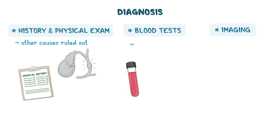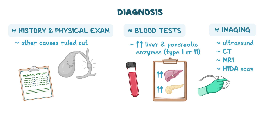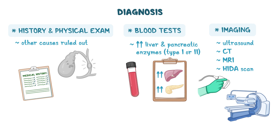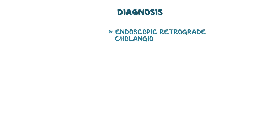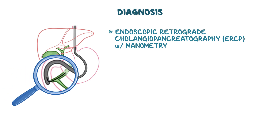Blood tests may show elevated liver and pancreatic enzymes in those with types 1 or 2. Imaging of the abdomen, including ultrasound, CT, and MRI may be done, as well as a HIDA scan, which can assess how the liver, gallbladder, and biliary tree are functioning. The gold standard to confirm SOD is an endoscopic retrograde cholangiopancreatography, or ERCP, with manometry. An ERCP involves placing a camera down an individual's throat into their intestine to visualize the sphincter of Oddi, while also conducting manometry, which assesses the pressure and constriction of the muscle.